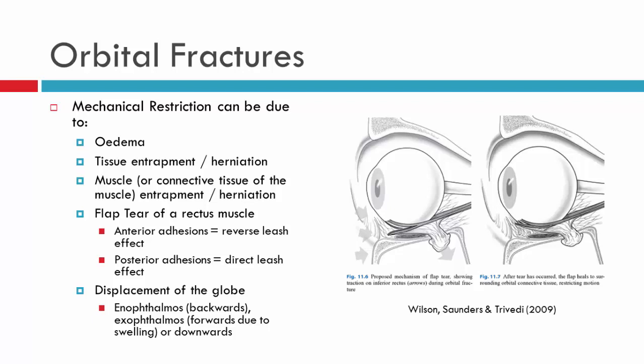You can also have displacement of the globe — either enophthalmos, exophthalmos, or a downward displacement — in which case you'll get restricted or limited eye movements. There are a number of reasons why the eye movements may be limited, and this will need to be further investigated. Generally a CT scan is warranted to look at whether there is tissue prolapse or muscle entrapment.